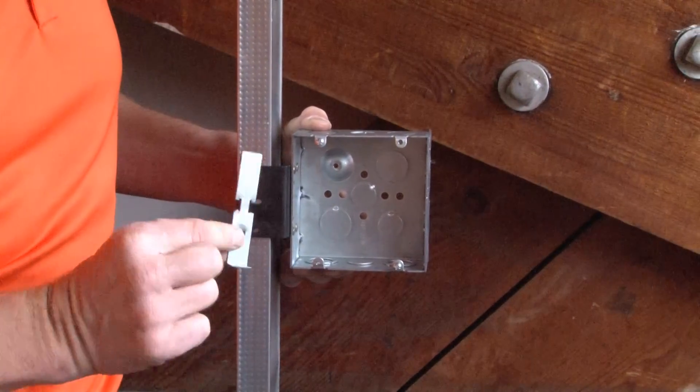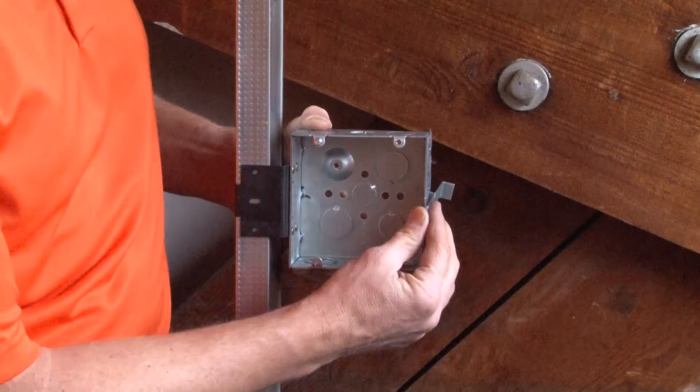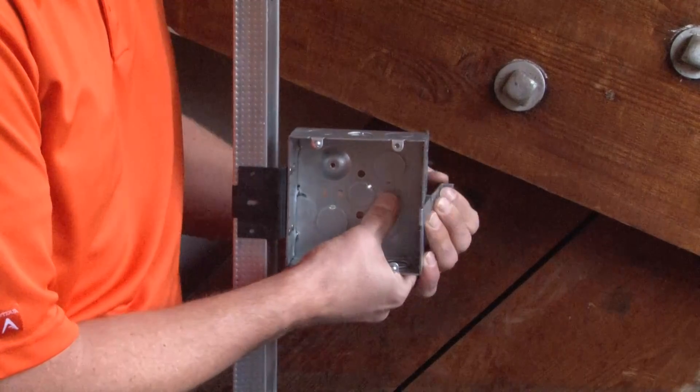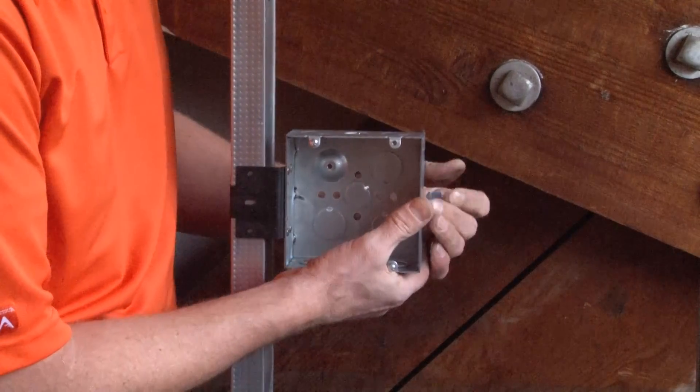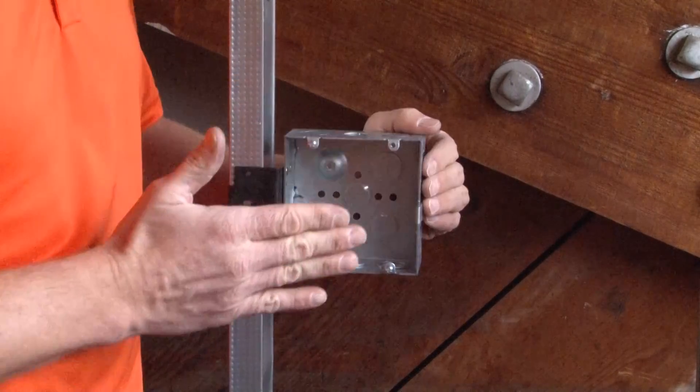The last step in the installation is to take the far side stand-off support clip, place it on the edge of the box, and snap it into place, which will give it extra rigidity against the backside drywall, preventing it from twisting.